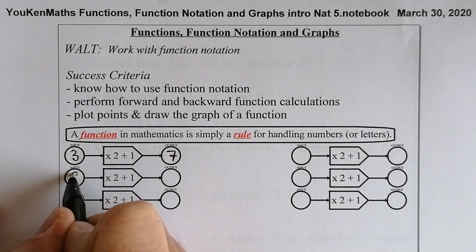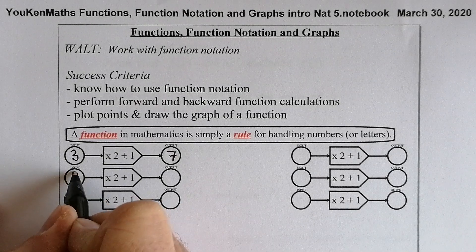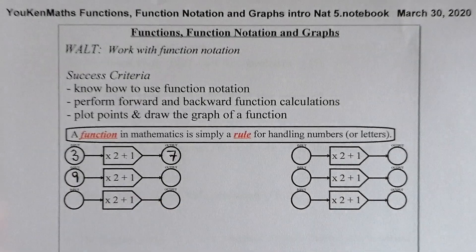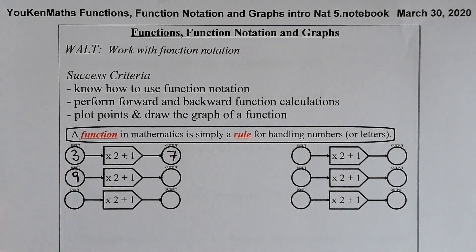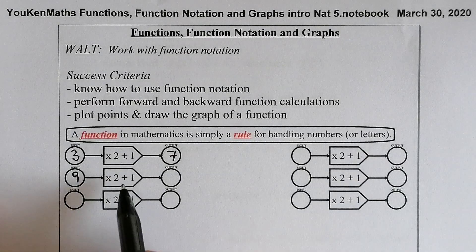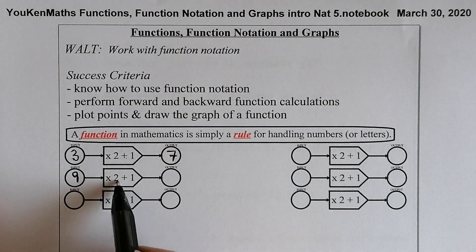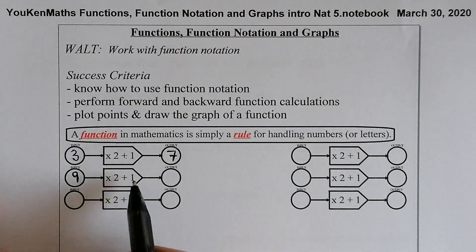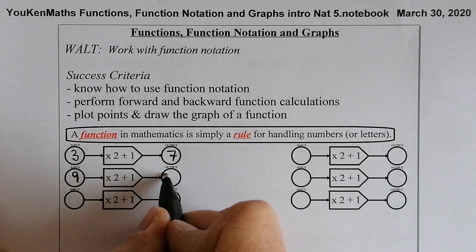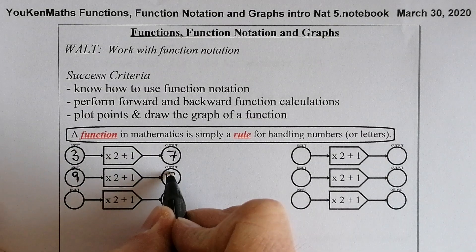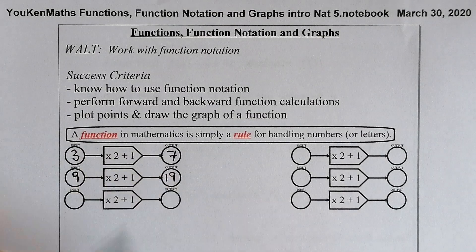Let's try another one. What if I put nine in as an input? Nine times two gives us 18, and 18 plus one gives us 19, so that should give us 19 out.